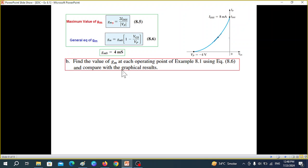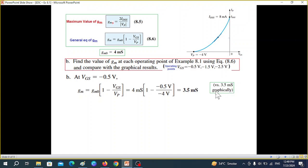First part is done. Now part B, find the value of GM at each operating point and then compare. So let's do it. These were the operating points: minus 0.5, minus 1.5 and minus 2.5. Let's do the first one at minus 0.5. This was the general equation that we derived. GM0, we have found 4 milli Siemens. One VGS minus 0.5 and this is minus 4. So the answer is 3.5 milli Siemens. And graphically, we found it to be 3.5 milli Siemens also. So they are same.